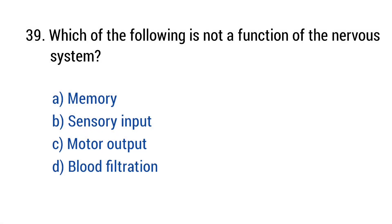Question number thirty-nine. Which of the following is not a function of the nervous system? The right answer is option D: Blood filtration.